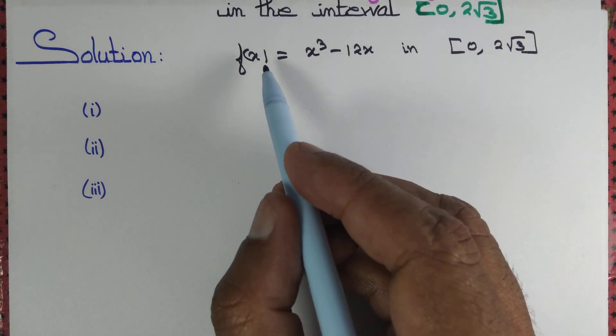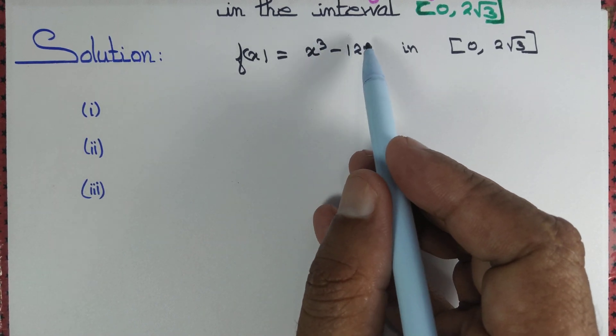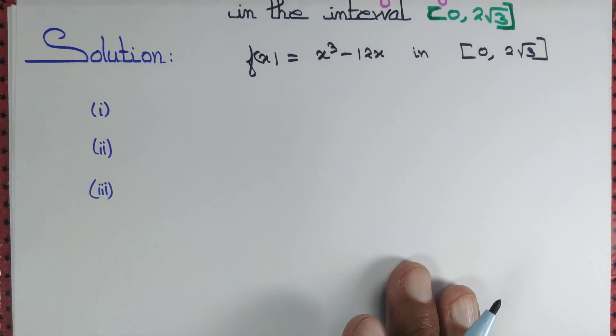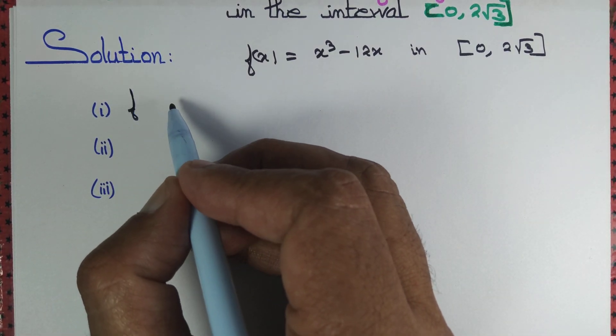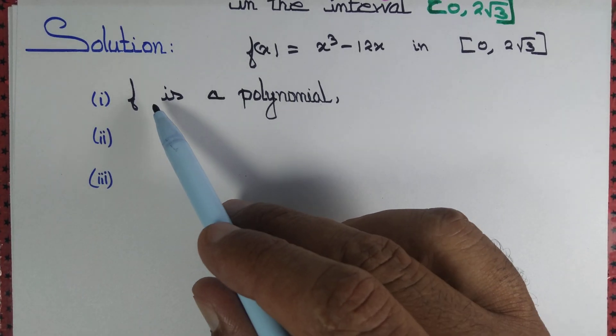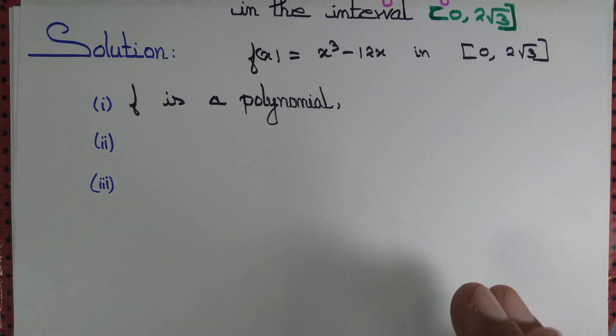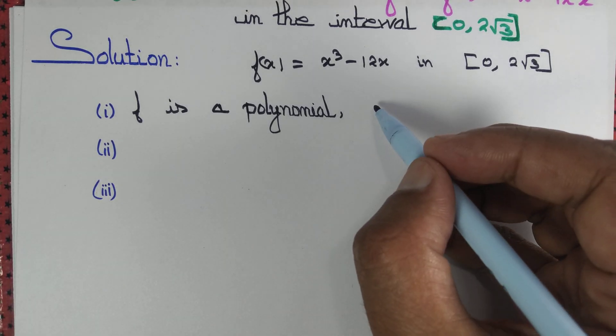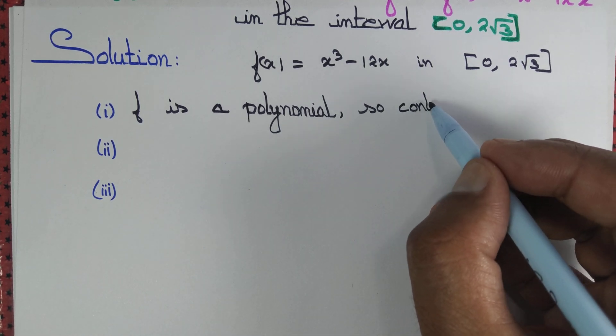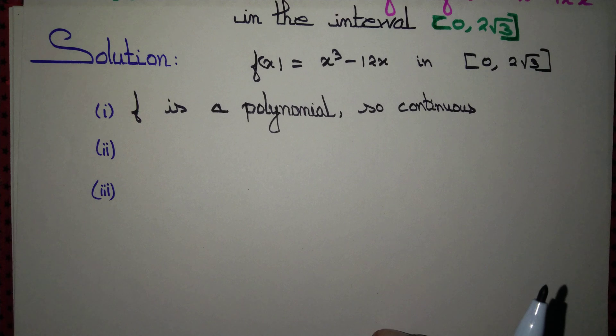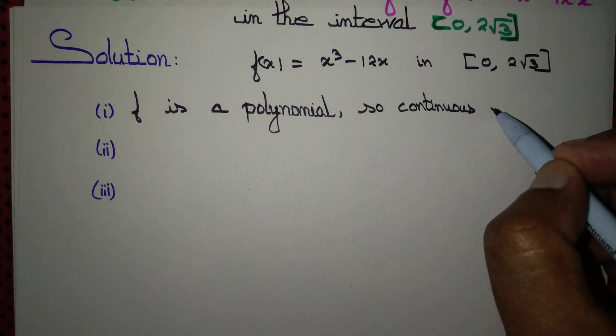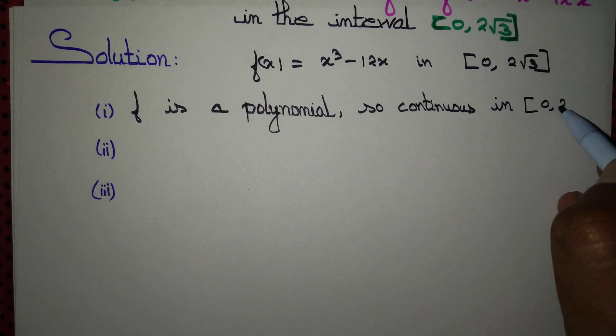First criterion: we should be sure that f is continuous. Is this function continuous? Observe that this is a polynomial function and polynomial functions are continuous. Since f is a polynomial, it is continuous throughout ℝ. But we don't need it to be continuous throughout ℝ — it is continuous in the interval [0, 2√3].